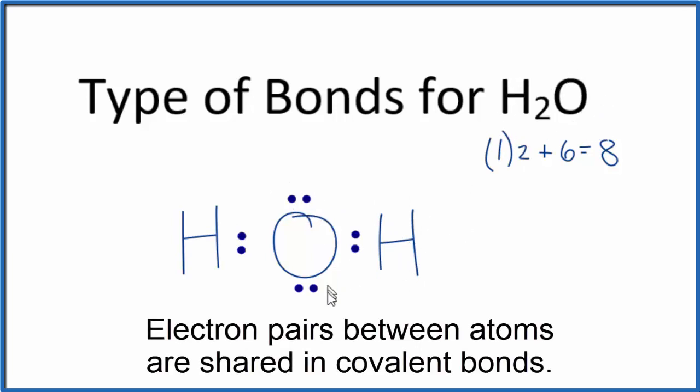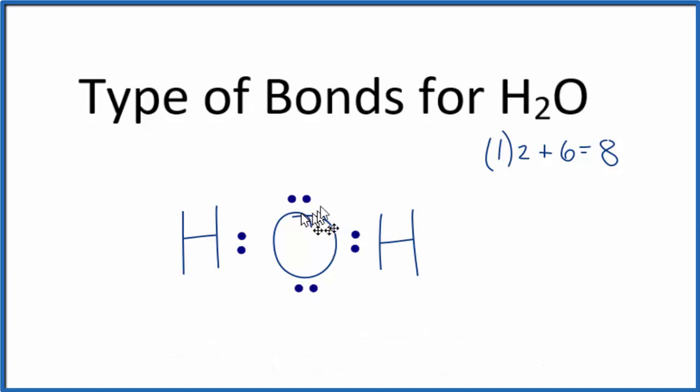These electrons here are called lone pairs or non-bonding pairs of electrons. They have their own shape and orbital but they're not bonded to anything. So we have a Lewis structure for water. Let's take a look at the shape of the molecule and talk about polarity, because it is a covalent bond but